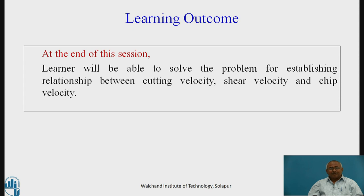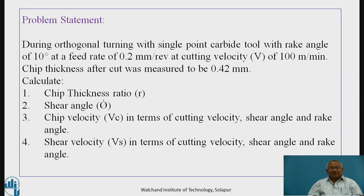We have to solve numericals on these velocities. The outcome of this session is you will be able to solve problems for establishing the relationship between cutting velocity, shear velocity, and chip velocity. The problem statement visible on the screen is: during orthogonal turning with a single point carbide tool having rake angle of 10 degrees, a feed rate of 0.2 mm per revolution at cutting velocity of 100 meters per minute, chip thickness after cut was measured to be 0.42 mm.